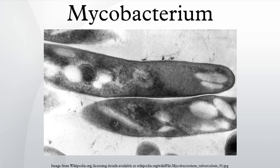A natural division occurs between slow and rapid growing species. Mycobacteria that form colonies clearly visible to the naked eye within seven days on subculture are termed rapid growers, while those requiring longer periods are termed slow growers. Mycobacteria cells are straight or slightly curved rods between 0.2 and 0.6 micrometers wide by 1.0 and 10 micrometers long.